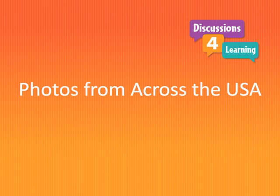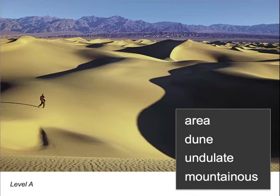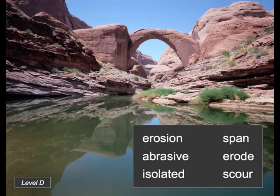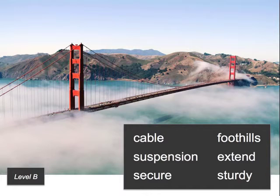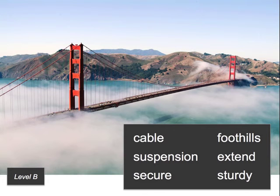The real-world photos include iconic images from across the USA, including this image from Death Valley, California — great for discussing the undulating sand dunes. The Rainbow Bridge National Monument in Utah provides a springboard for discussing erosion. Students discuss what a suspension bridge is as they view the Golden Gate Bridge in San Francisco, California. There are many opportunities for connections to technology and engineering as students view and discuss a variety of structures and buildings.